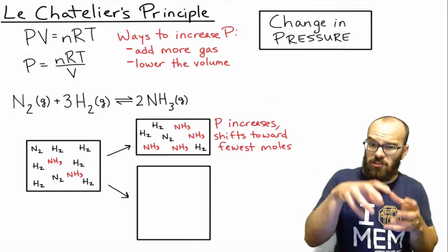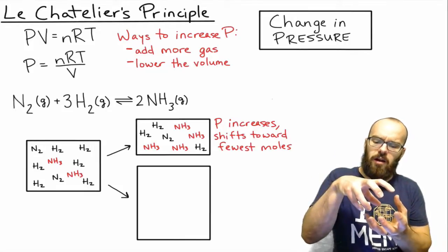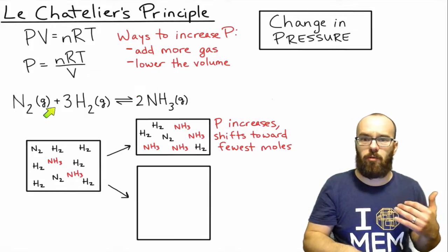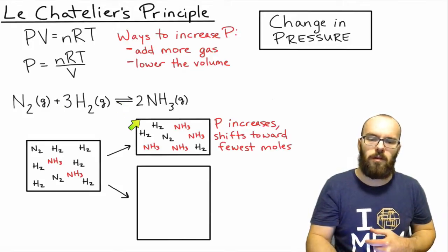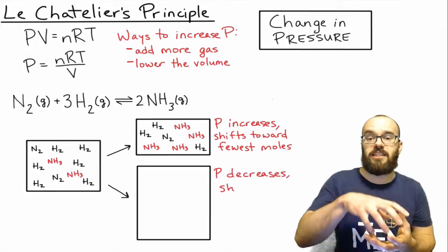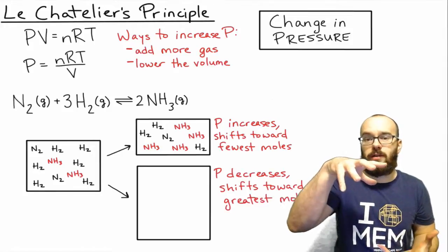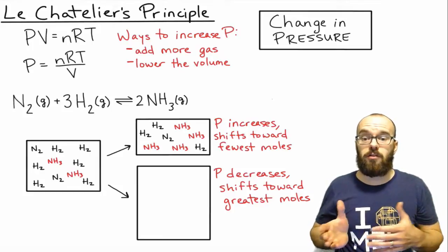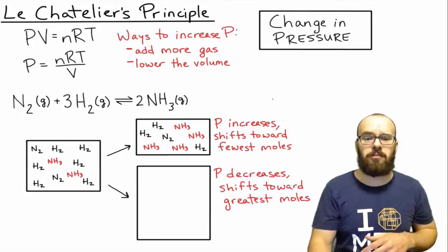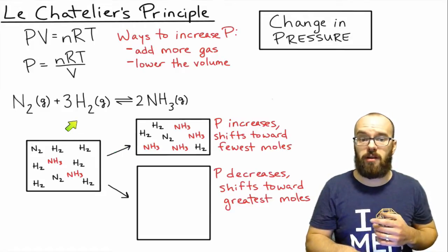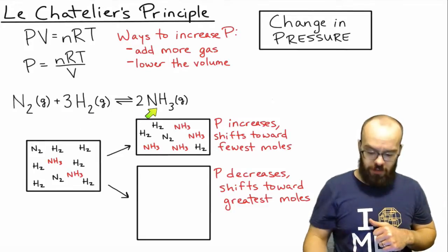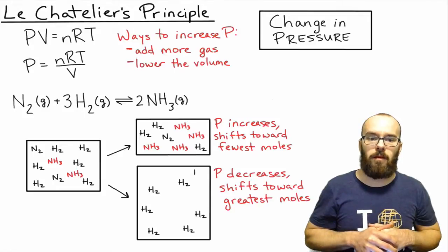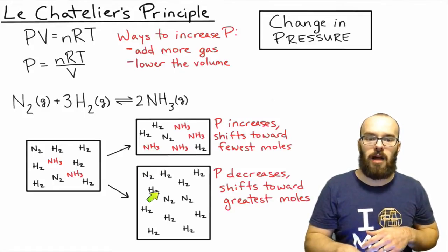If you think about what's actually going on in the molecules, whenever you compress the gas molecules together, wherever there's the greatest number of moles of gas, those are going to get compressed the most, shifting it to the other side. Let's look at what happens if we expand the container, increasing the volume and therefore decreasing the pressure. This is going to shift it the other way — toward the greatest number of moles. The greatest number of moles stoichiometrically is on our reactant side, four moles for every two moles of product that are produced. So this is going to shift it toward the reactants, using up some more of that ammonia, and producing more of the reactants.